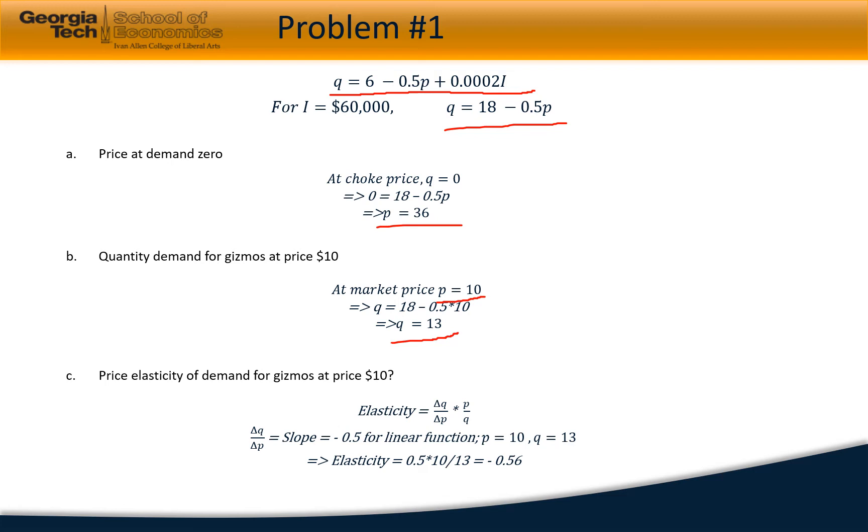The next question asks about the price elasticity of demand at $10. We know the definition of elasticity is the delta change in quantity by the delta change in price, multiplied with the price by quantity. Since it's a linear function, we know delta q by delta p is equal to minus 0.5.